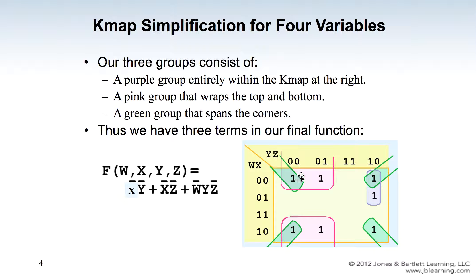The third group covers the four corners of the KMAP. W changes from zero to one so W is dropped. X equals zero so we keep X-not. Y changes from zero to one so Y is dropped. Z equals zero so we keep Z-not. The green corner group is represented by X-not and Z-not.